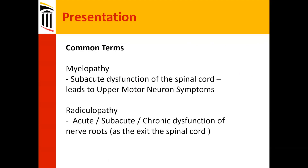Terms often used in this field: myelopathy, formally defined as a subacute dysfunction of the spinal cord leading to upper motor neuron symptoms. Radiculopathy is where a nerve root gets compressed coming out of the foramen — it can be acute, subacute, or chronic dysfunction, and is very specific in its presentation.